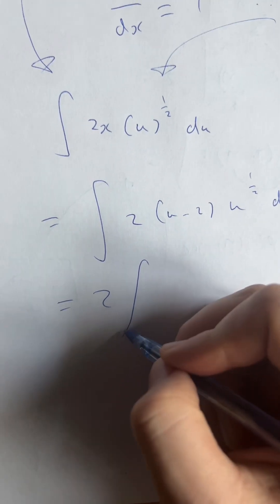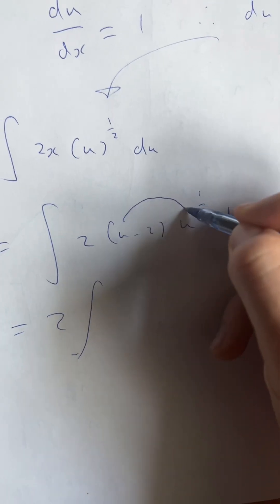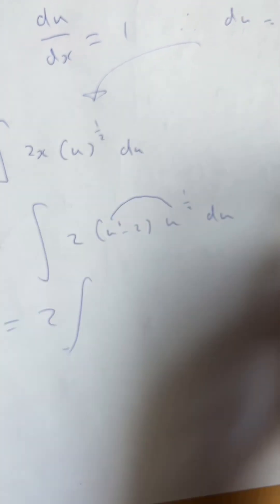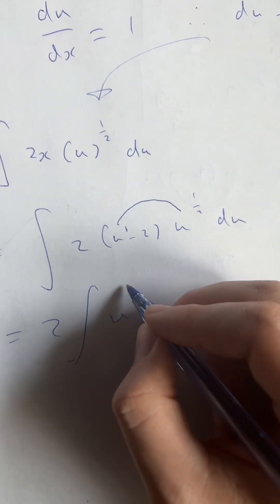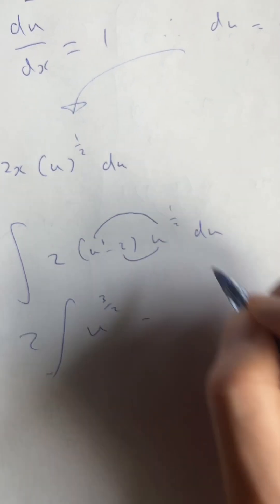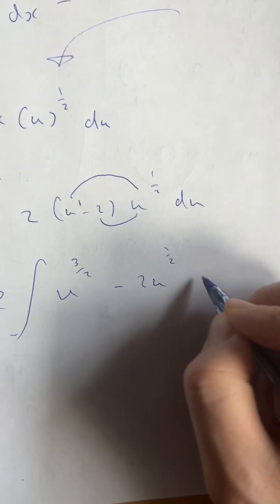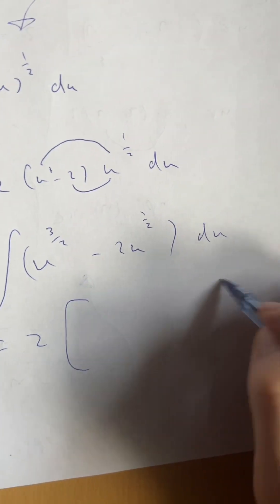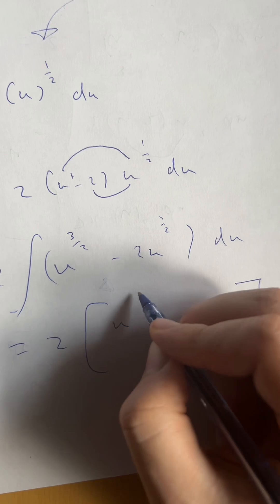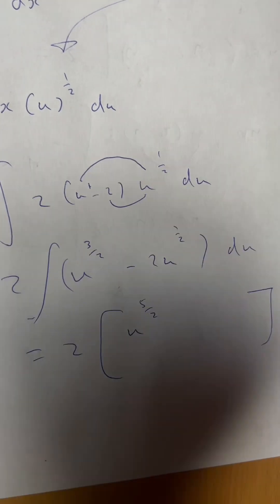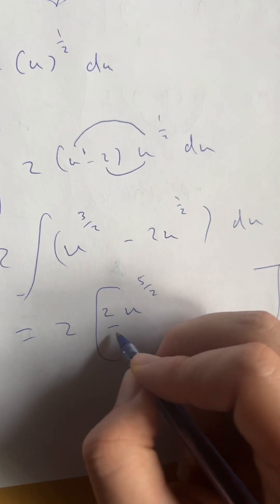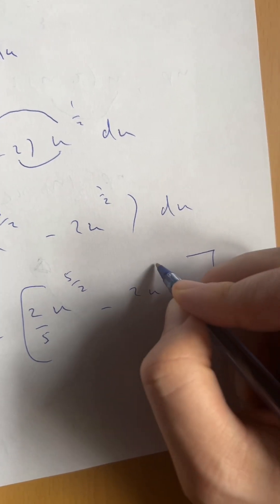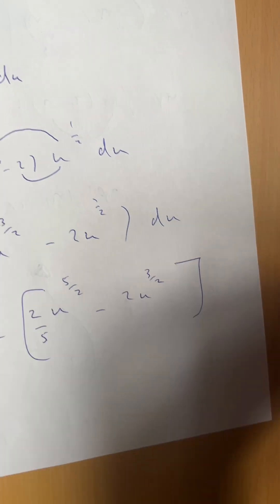Bringing the 2 to the outside, we can now just expand the brackets like GCSE maths using indices. u to the power of one times u to the power of a half — add the powers — gives u to the power of three over two. And then minus two times u to the half. Now we do year-one integration: add one to the power and divide by the new power. So u to the power of five over two divided by five over two, which is the same as multiplying by two over five. The second term has power one half, add one to get three over two, divide by three over two which is multiplying by two over three.